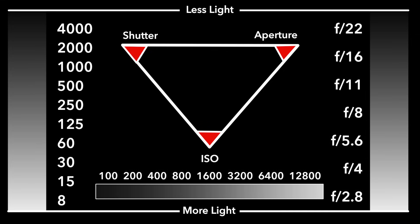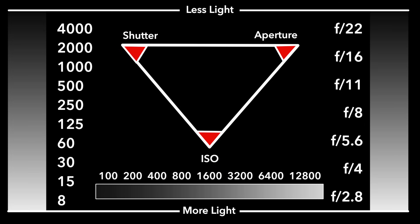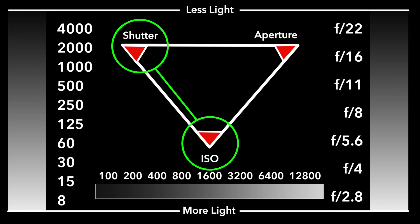Now that we know about the three things — ISO, aperture, and shutter — and the meter that's built into our camera, how does all of this work? Normally on the exposure triangle you set two things and your camera figures out the third using its meter. You'll set either the ISO and aperture and the camera will figure out the correct shutter speed, or you'll set the ISO and shutter speed and the camera will figure out the correct aperture value using the built-in light meter.